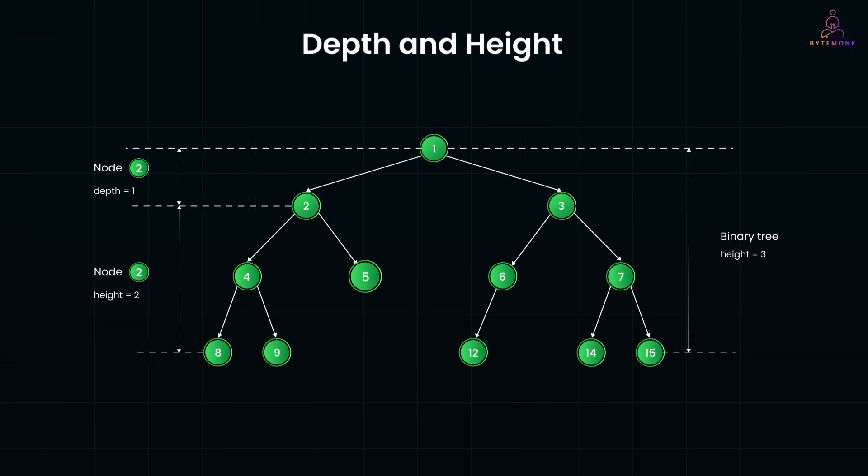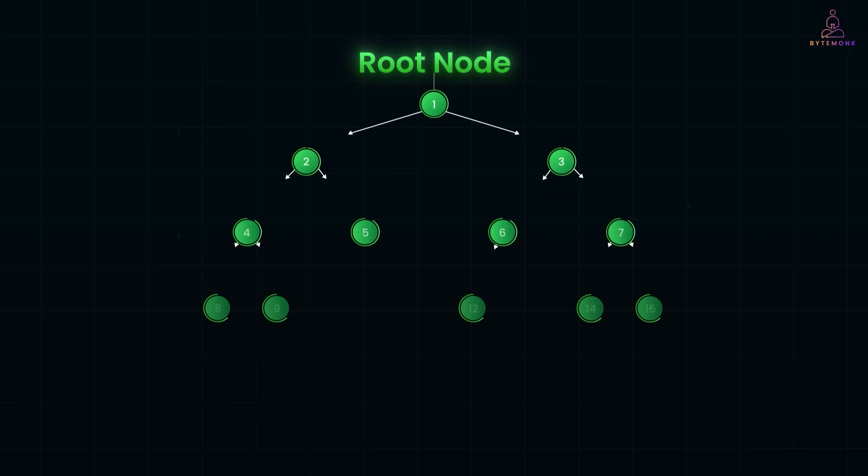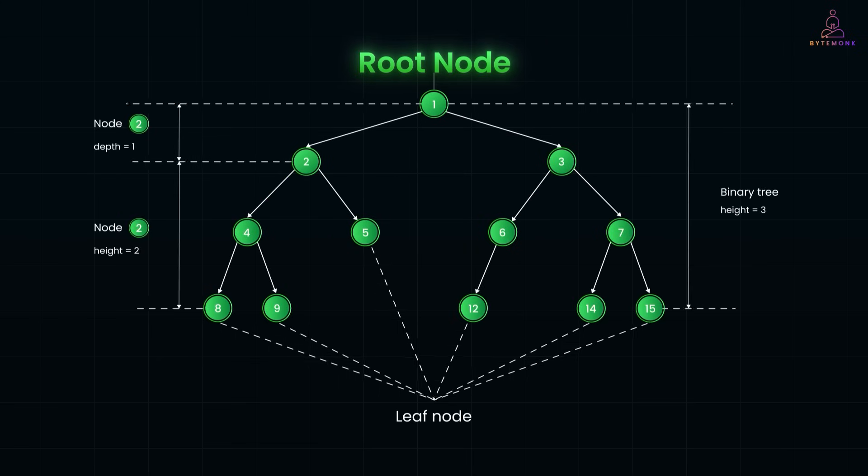These help us understand the position of a node in the tree and how much work it might take to reach it, or to search below it. They are also essential when we talk about whether a tree is balanced, which directly affects their performance. Depth refers to how far a node is from the root. It's the number of edges from the root to that node. The root has depth zero, its children have depth one, and so on.